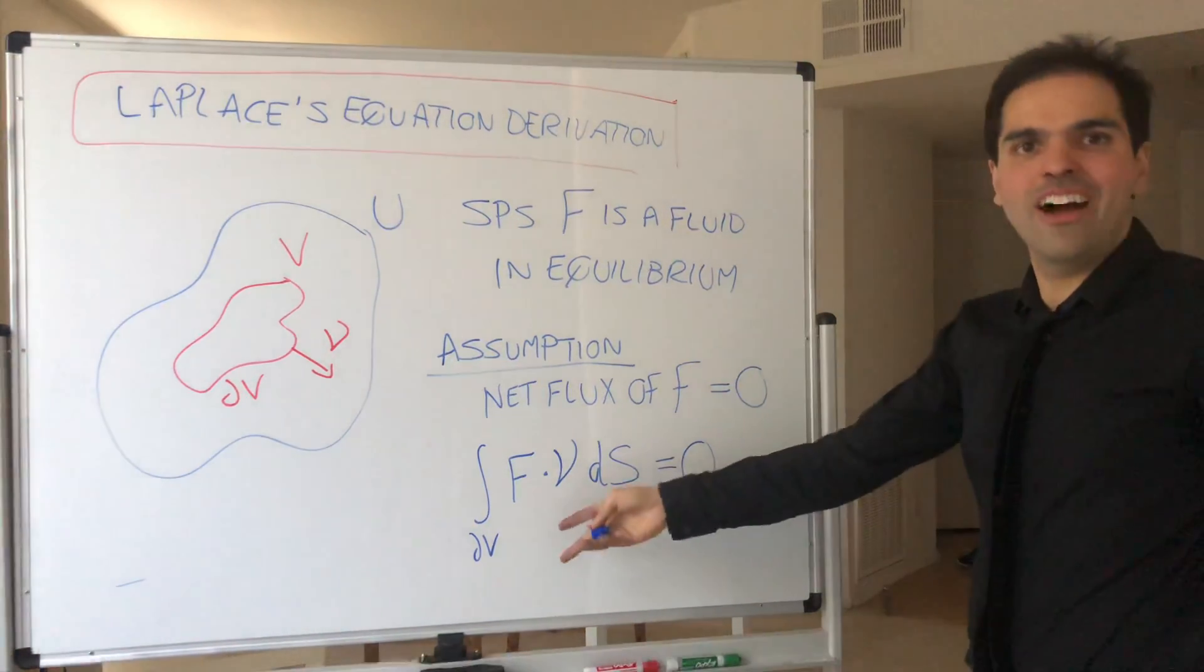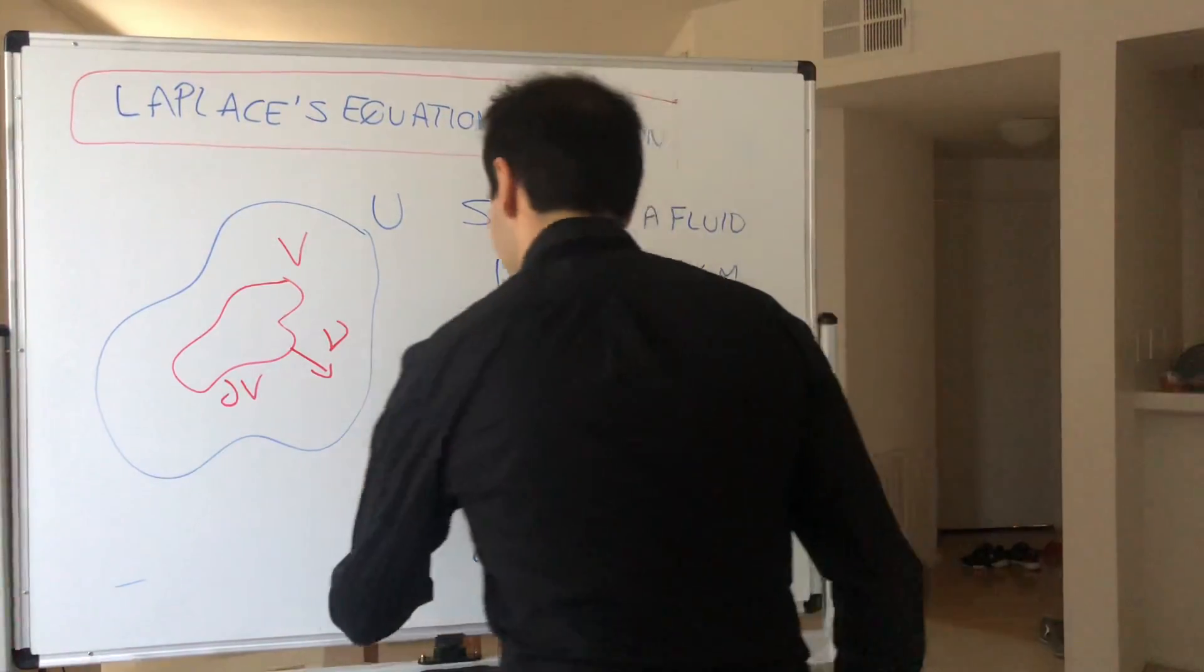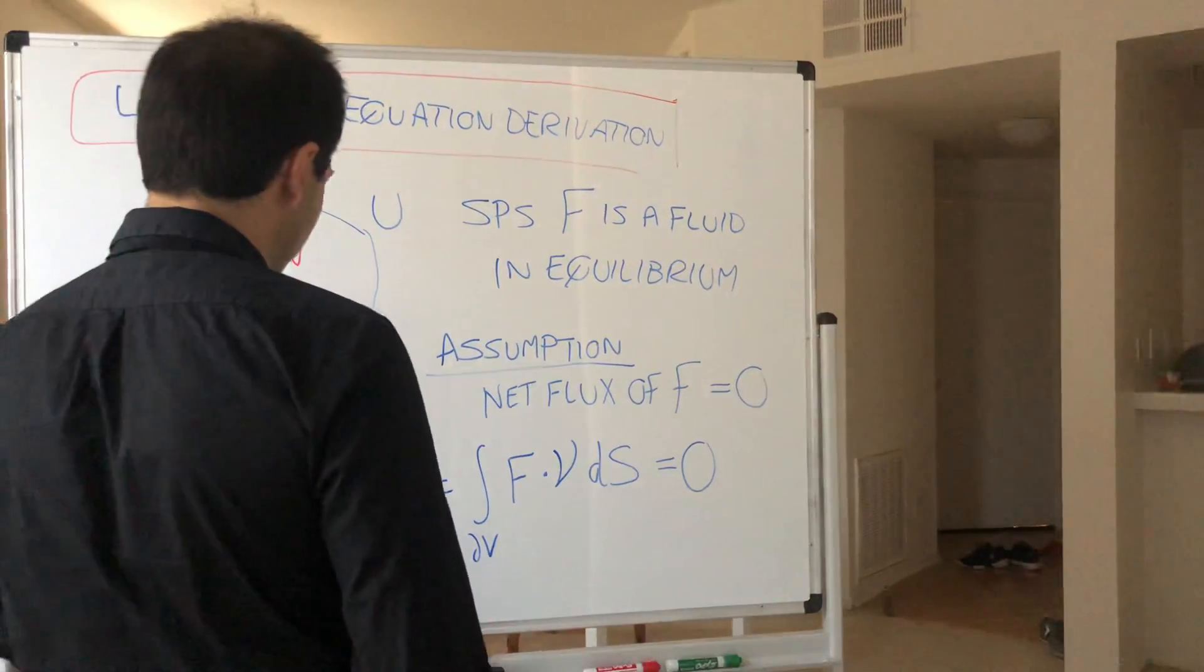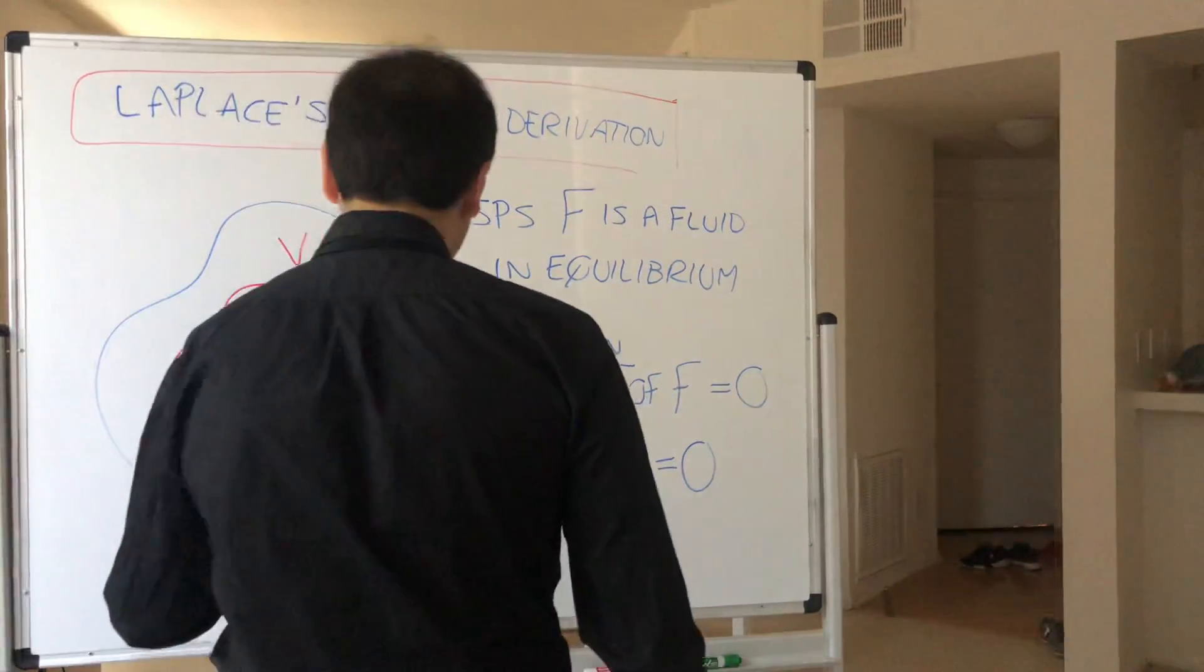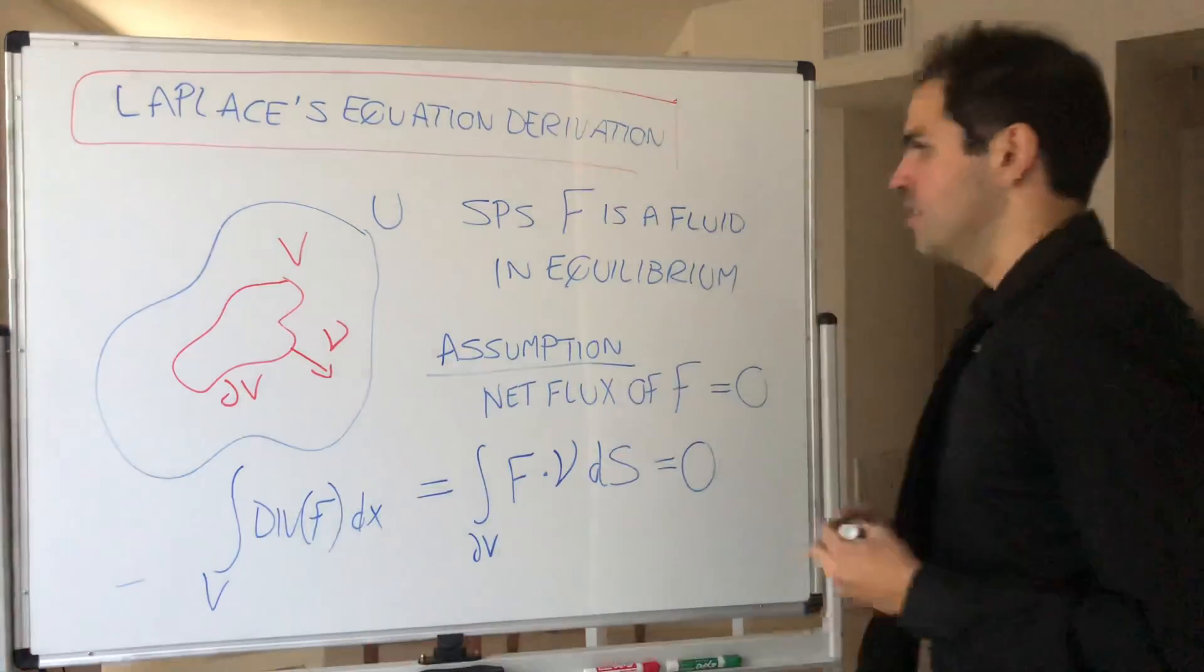But the nice thing is, well, this is very divergence theorem-y. So, by the divergence theorem, this becomes the integral over all of V of the divergence of F dX equals zero.